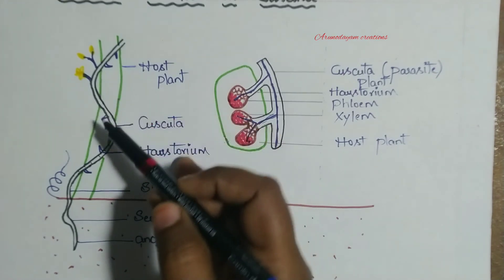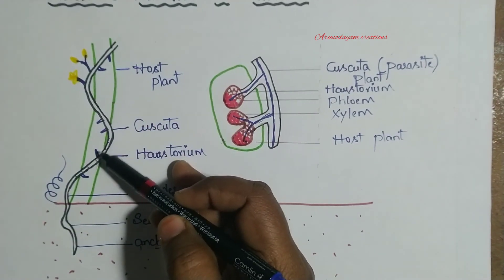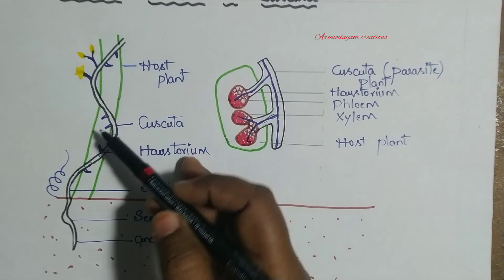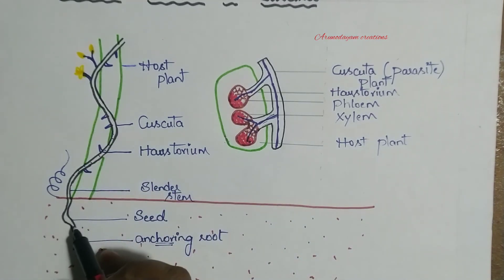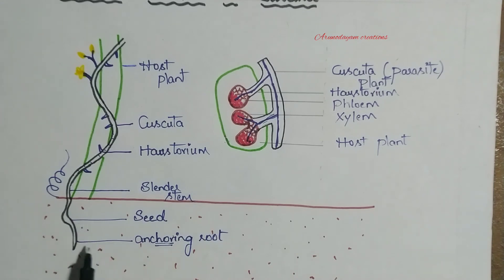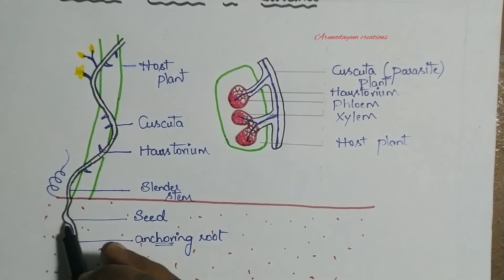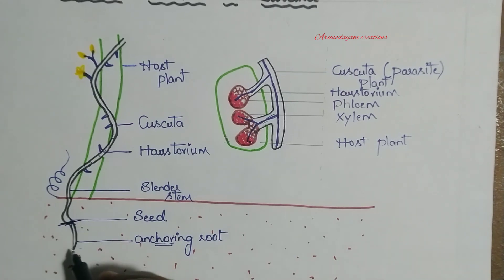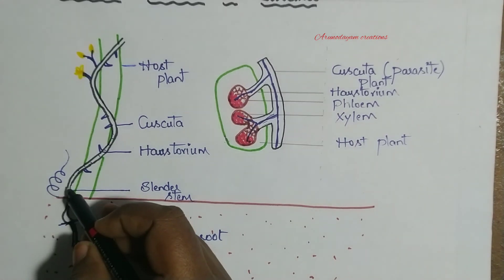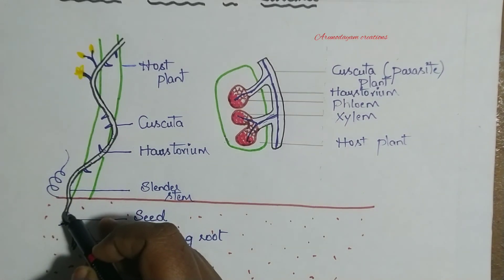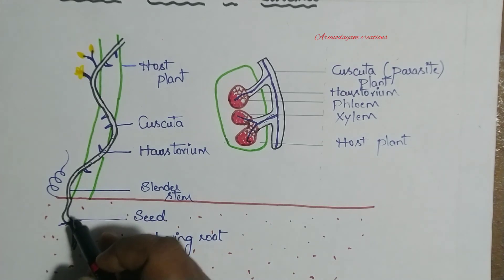Meanwhile, when the plant is completely supported by food and water from the host, the original anchoring roots in the soil will rot away. So automatically, this Cuscuta plant will detach from the soil.